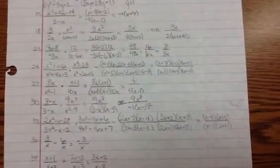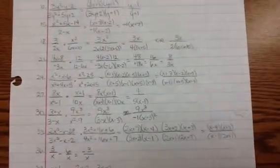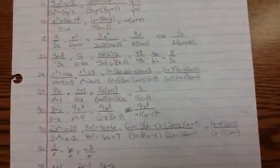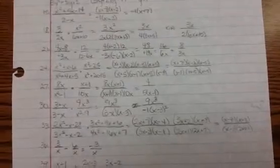And 2x plus 1 on the bottom. On all of those, 6 through 33, I factored and then crossed out common factors.